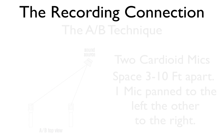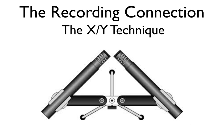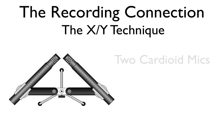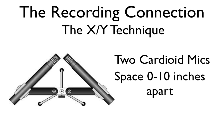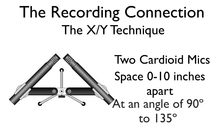The next technique is the X-Y technique. The X-Y technique actually uses two cardioid microphones — both have to be the same type and same manufacturer — with both microphone capsules placed either as close as possible or at least within 12 inches of each other, facing each other at an angle ranging from 90 degrees to 135 degrees. This really depends on the sound source and the particular sound desired. These microphones are placed at the center, facing directly at the sound source, and panned left to right.